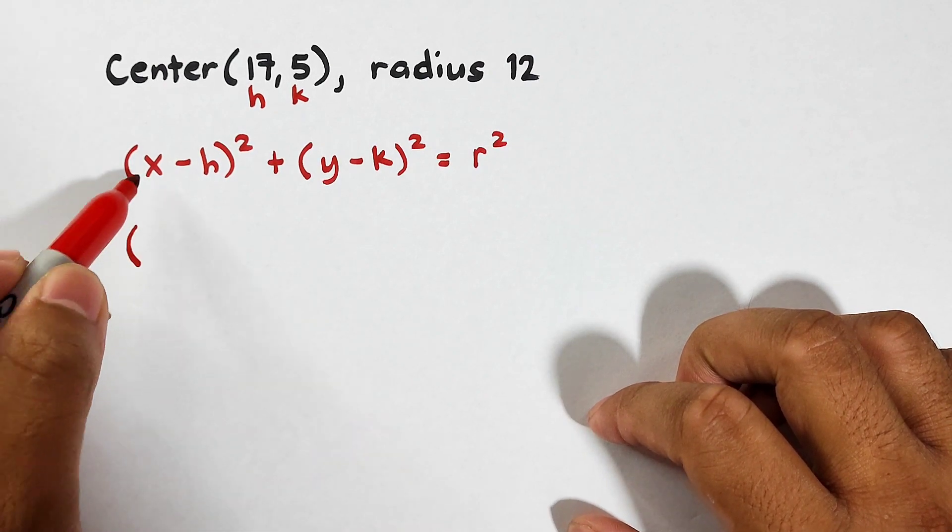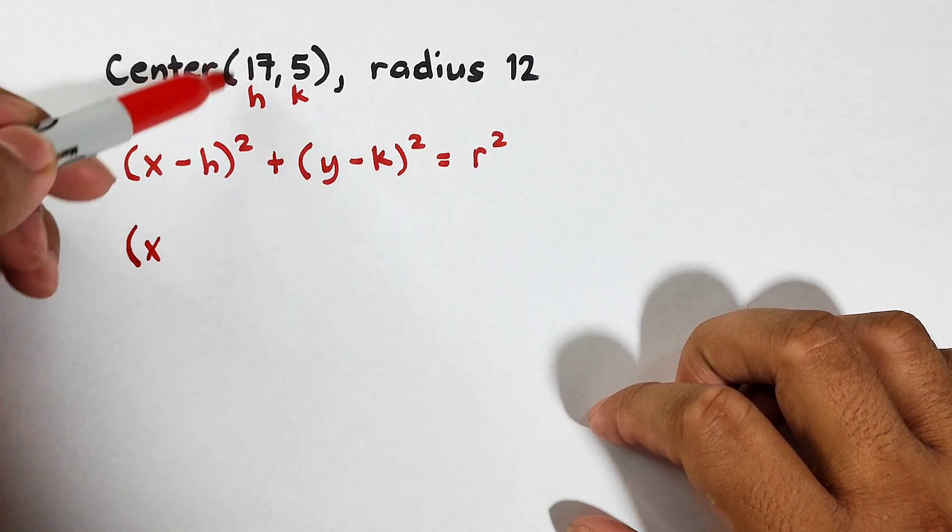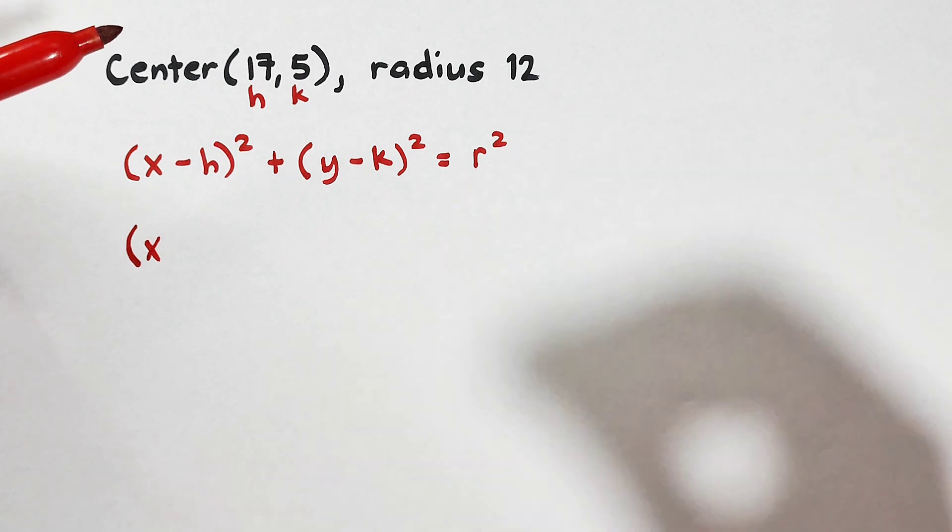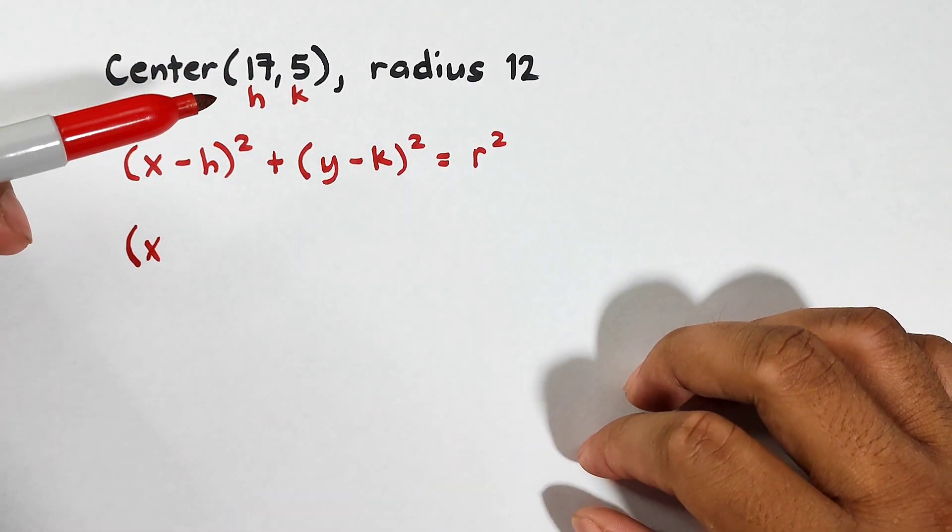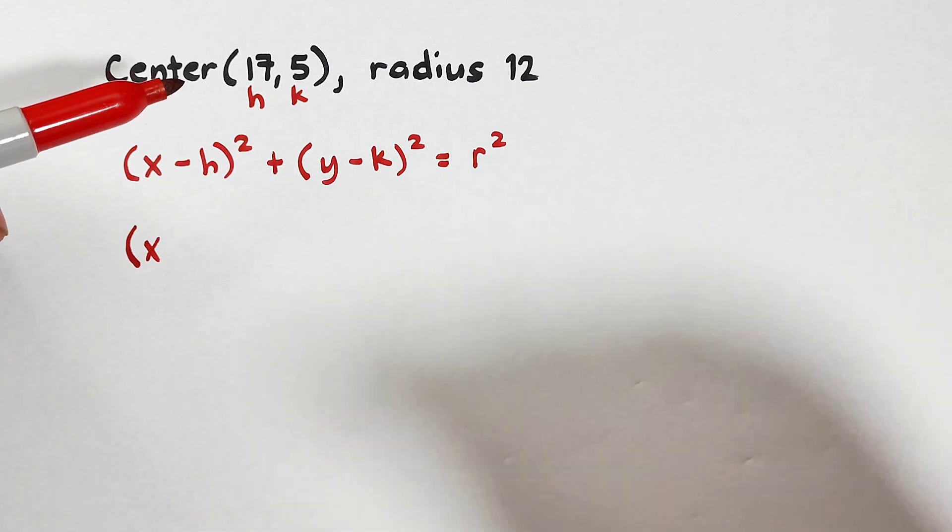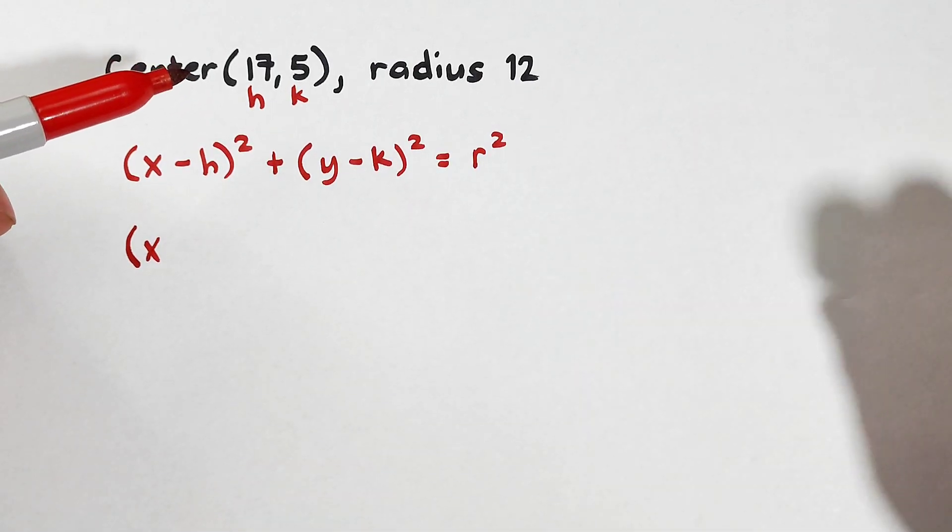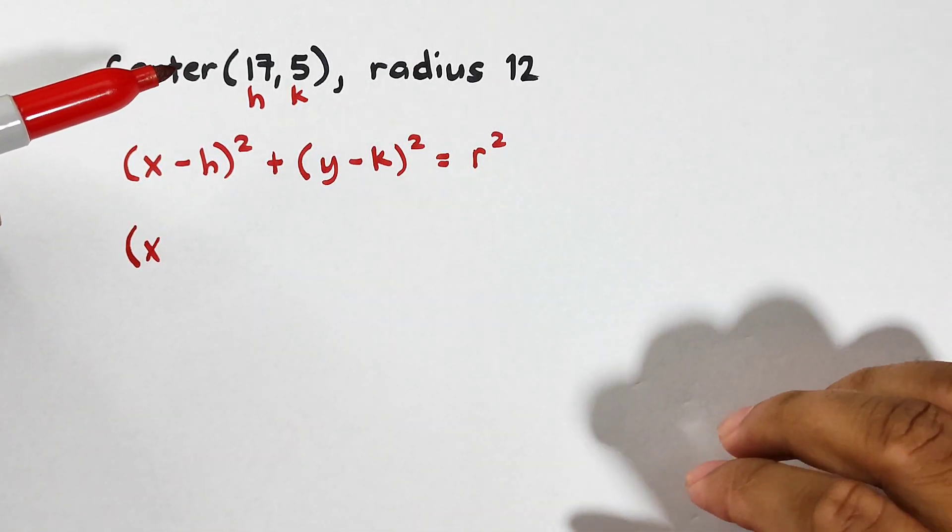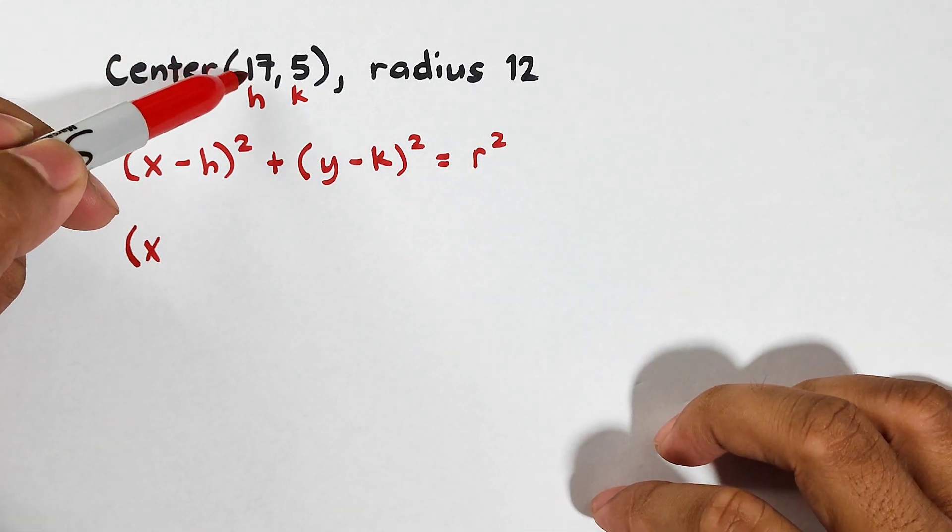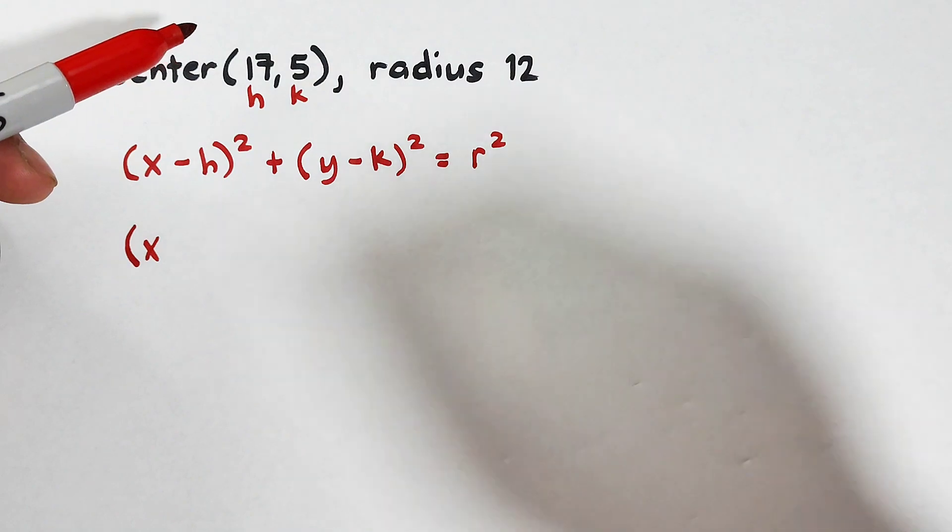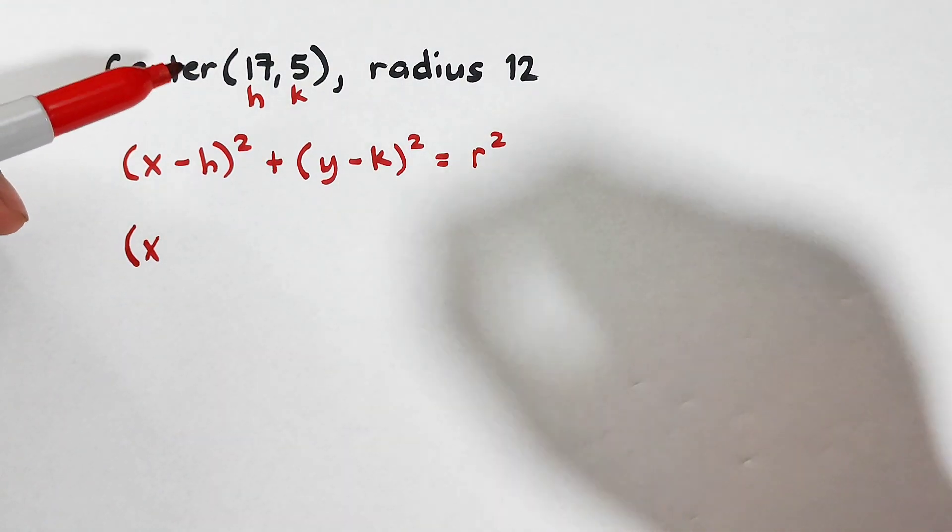Now, you might be confused. You have to copy x and then here, to make it easy for you to remember, when you plug in h and k, all you need to do is to put its additive inverse. So the easiest way to remember, whatever sign you see with your h and k, use the reverse or opposite sign.